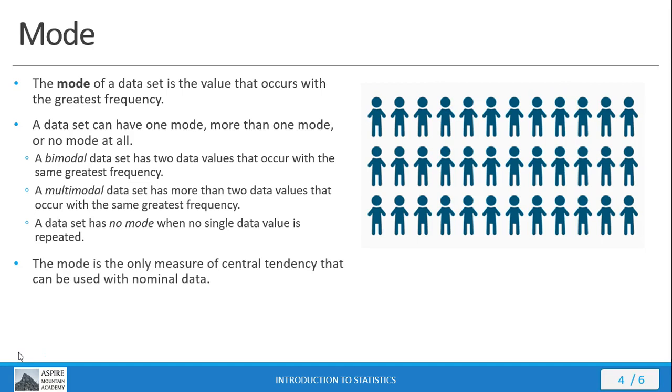Here's an important point that you need to remember. The mode is the only measure of central tendency that can be used with nominal data. This should make sense, provided you remember what nominal data are. Nominal data is categorical data with no natural order to it. You can take the mode for nominal data because you're just looking at which category occurs with the most frequency.